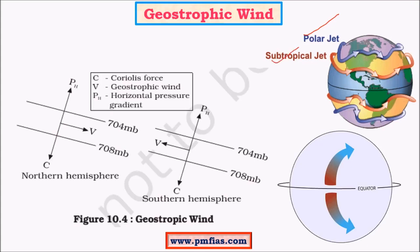The subtropical jet stream is observed around 30 degrees north and south latitudes, whereas polar jet streams are observed around 60 to 65 degrees north and south latitudes. Jet streams move from west to east because of the Coriolis force, which we will see in detail later. So jet streams are the best example for geostrophic winds.